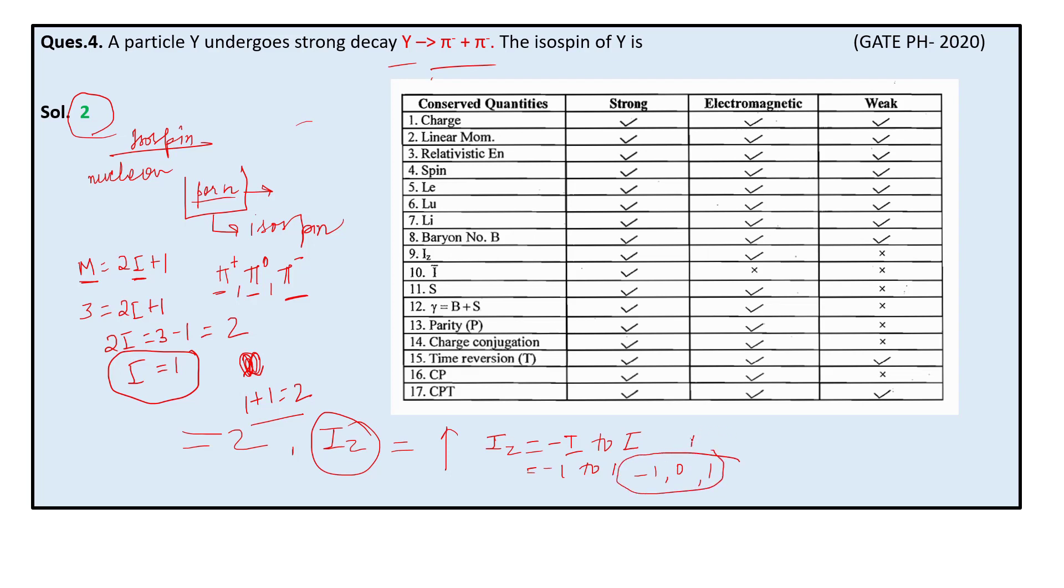For π⁺, the i value is 1 but iz = 1. For π⁰, the i value is the same as π⁺, but iz = 0. For π⁻, i is the same (1), but iz = -1.